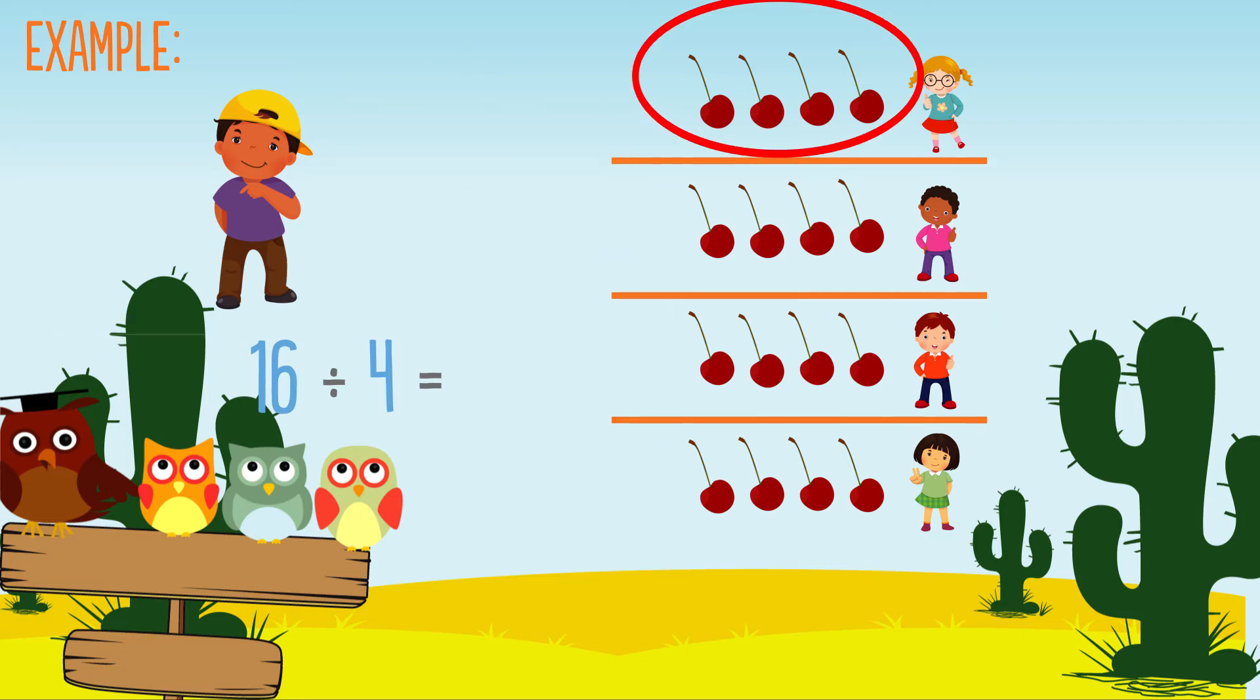Let's count how many sweets are in each group to get our answer. 16 divided by 4 is 4.